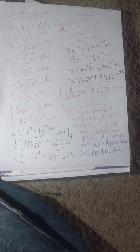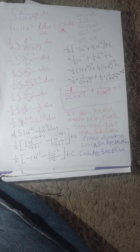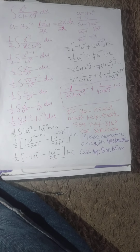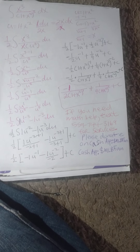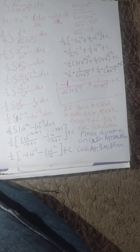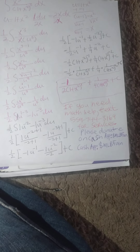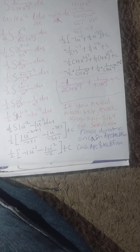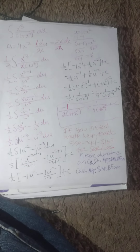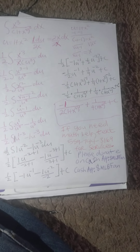So, now we integrate, and this is an indefinite integral. This is going to be 1 half times 1u to the negative 2 plus 1 divided by negative 2 plus 1, minus 1u to the negative 3 plus 1 divided by negative 3 plus 1. And this will yield 1 half times negative 1u to the negative 1 minus 1u to the negative second divided by negative 2.